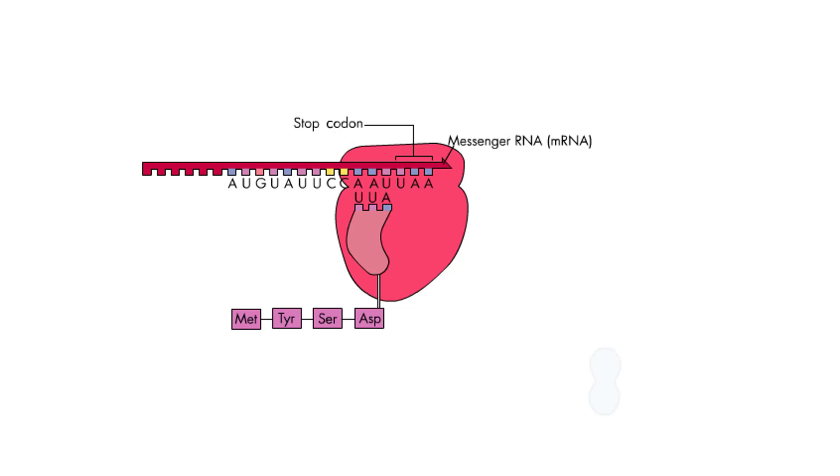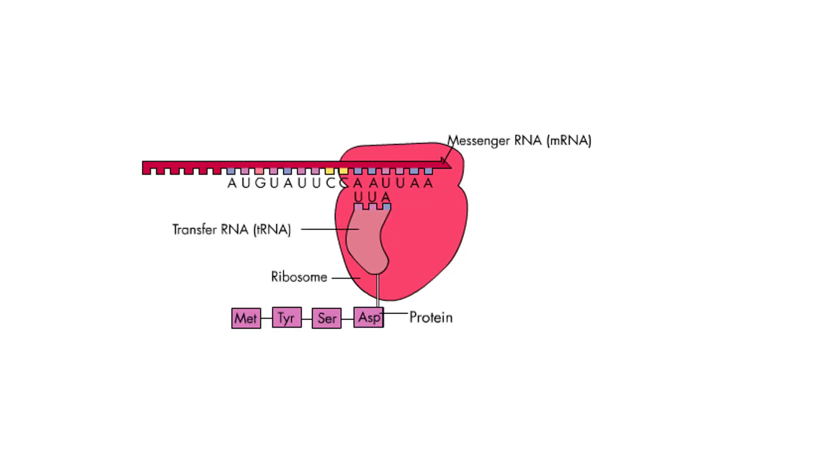When a ribosome comes to a stop codon, a protein called a termination factor binds to the mRNA-ribosome complex. This stops elongation. With no new tRNA to be passed to, the protein is released from the last tRNA.